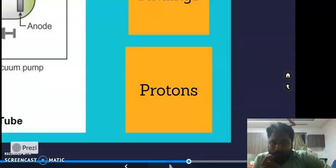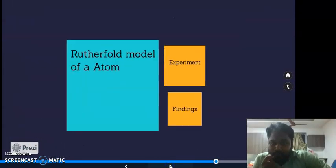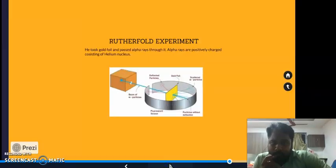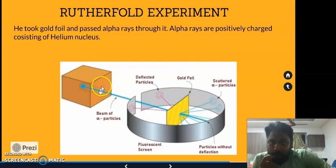Next is Rutherford's model of the atom. He did a remarkable experiment on the structure of an atom. He took a gold foil and passed alpha rays through it. As shown in the figure, alpha rays are positively charged, consisting of helium nuclei.